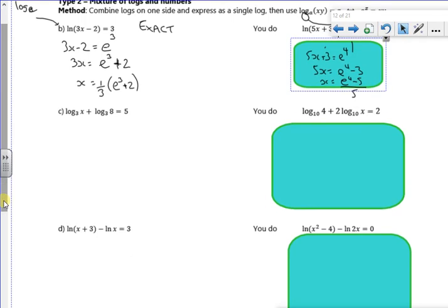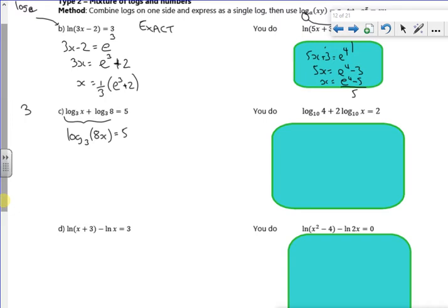On this next one, because it's log to base 3, I'm going to do 3 to the power of. So because it's a plus, I'm just going to times them together. And then to get rid of log to base 3, I'll do 3 to the power of. So 8x is 3 to the power of 5, which is 243.